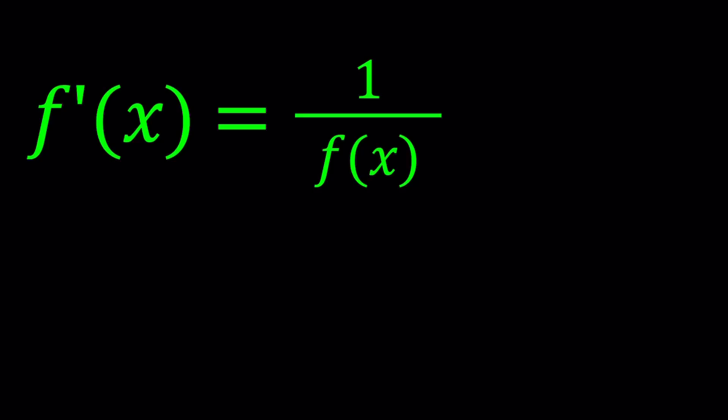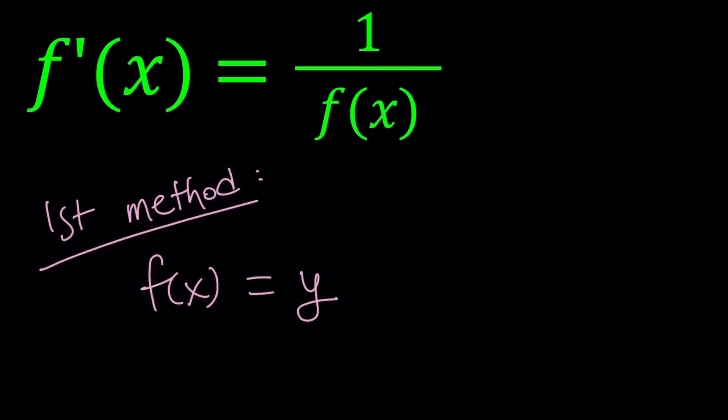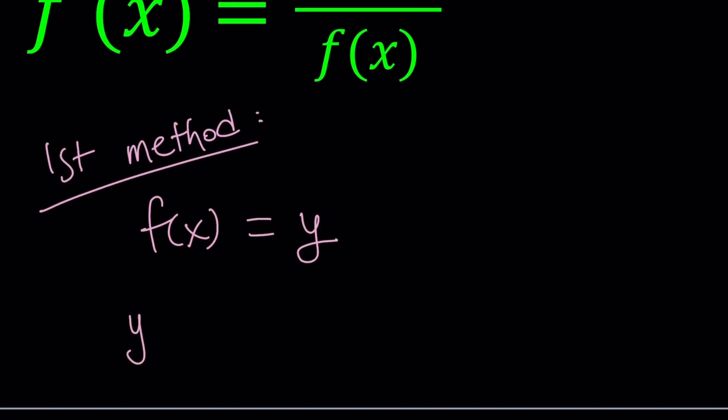So let's get started with the first method. For my first method I'm going to replace f of x with y. And you probably know y right? And it's going to simplify the process. So this gives me y prime equals 1 over y.